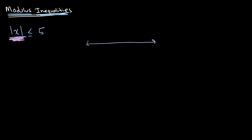On a number line, the magnitude of a number is essentially its distance from 0. For example, a magnitude of 5 can either be 5 to the right, which is positive 5, or 5 to the left, which is negative 5.